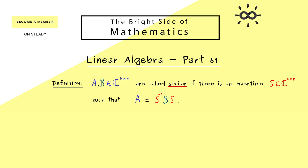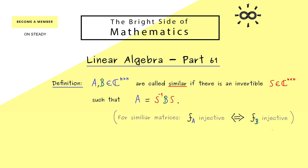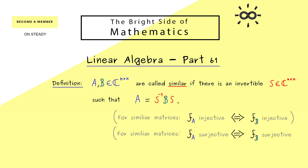In some sense, similarity gives us the essential properties of matrices A and B. For example, if we go to the corresponding linear maps FA and FB, then it follows that injectivity is independent of the matrix we choose. More concretely, FA is injective if and only if FB is injective. This is a very nice exercise, because it's about the kernel of the two matrices A and B. You should immediately remember this when we talk about similar matrices. Moreover, you can also show that the equivalence holds for surjectivity as well.